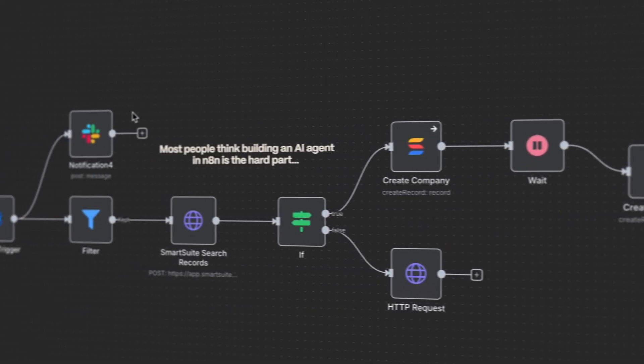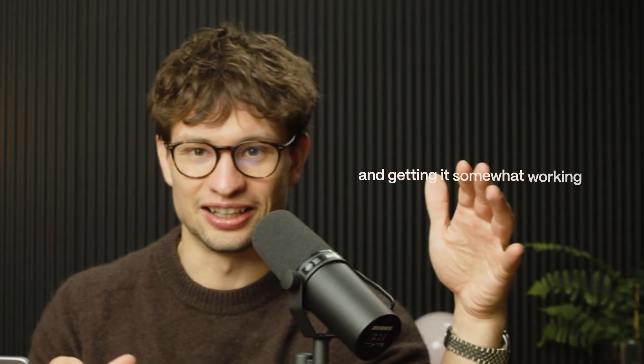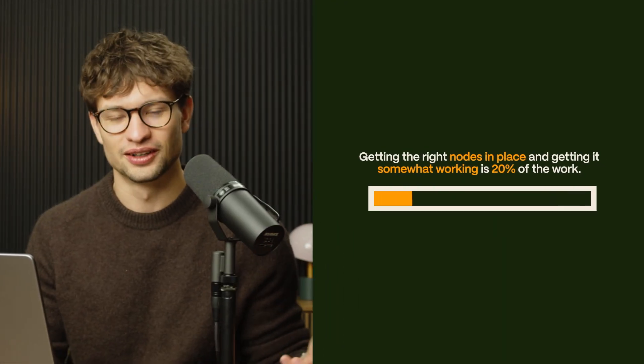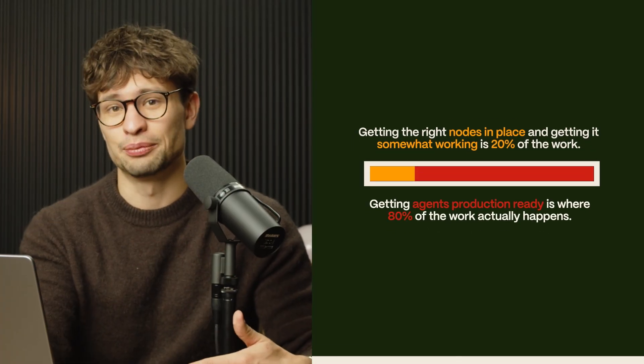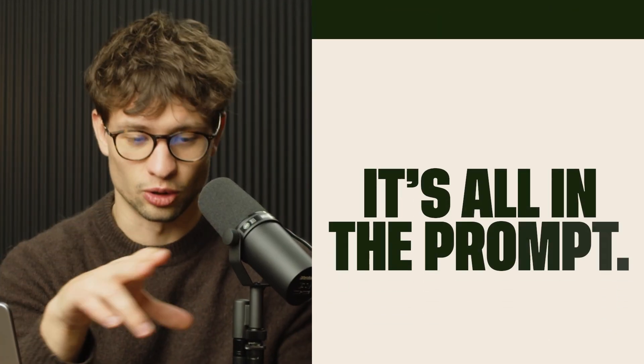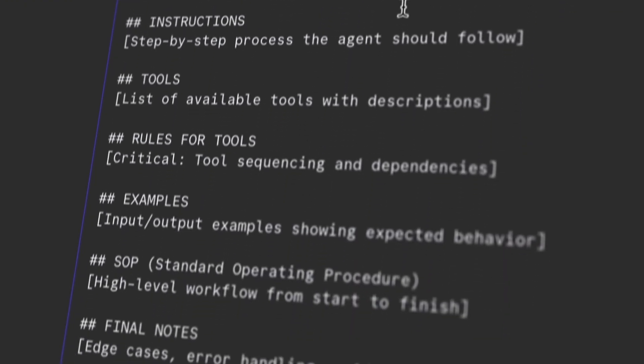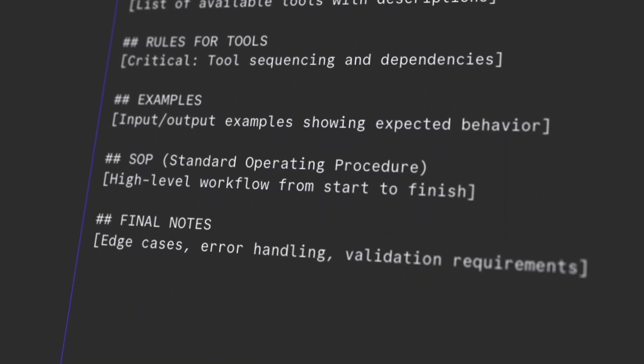Most people think building an AI agent on N8N is the hard part, but here's the truth. Getting the right nodes in place and getting it somewhat working is just 20% of the work. To get agents production ready is where 80% of the work actually happens, and it's all in the prompt. I'll show you the exact prompting framework and iteration process we use to build AI agents and workflows that businesses can actually rely on.